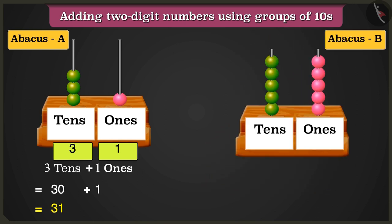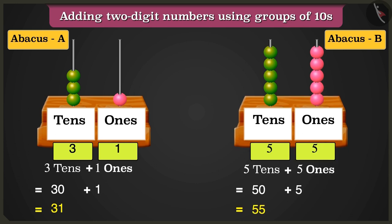So abacus B has 5 10s and 5 1s. So here, 5 10s that are 50 added to 5 1s, that are 5 will make the total number as 55.